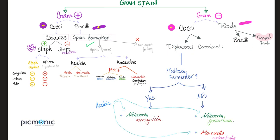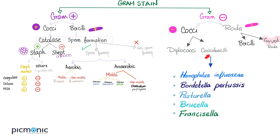Diplococci include Neisseria gonorrhea, Neisseria meningitidis, and Moraxella catarrhalis. Between the two Neisseria, only the meningitidis — with an M — ferments maltose, also with an M. The coccobacilli include Haemophilus influenzae, Bordetella pertussis, Pasteurella, Brucella, and Francisella.